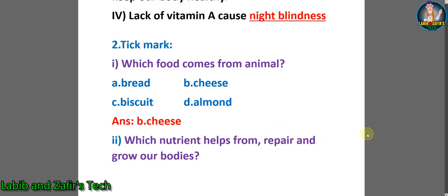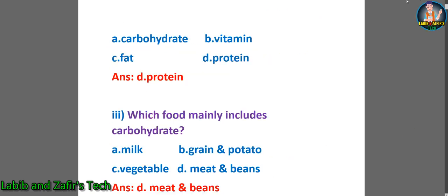Now let's go through some tick marks. Number 1: which food comes from animals? A. Bread, B. Cheese, C. Biscuit, D. Almond. We know cheese comes from animals. Number 2: which nutrient helps to repair and grow our bodies? A. Carbohydrate, B. Vitamin, C. Fat, D. Protein. We know protein builds our body.